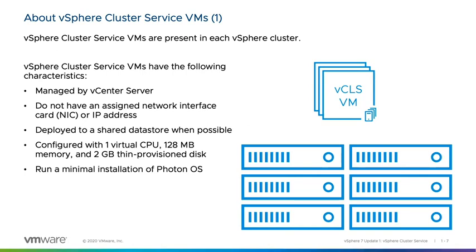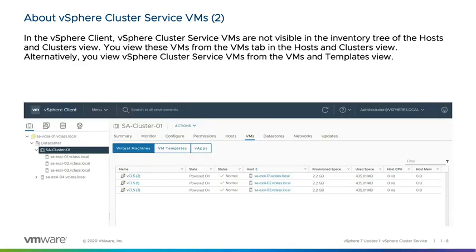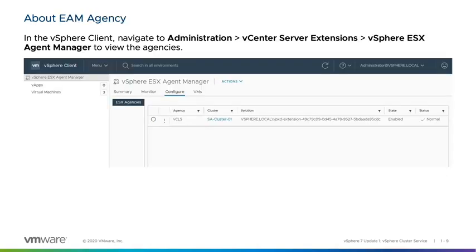The VM console interface is used to access the vSphere Cluster Service VMs. If the vCLS VMs are powered off, vCenter Server will automatically power them back on. In the vSphere Client, vCLS VMs are not visible in the inventory tree of the Hosts and Clusters view. You view these VMs from the VMs tab in the Hosts and Clusters view, or from the VMs and Templates view. You can also view the EAM agencies by navigating to Administration > vCenter Server Extensions > vSphere ESX Agent Manager.